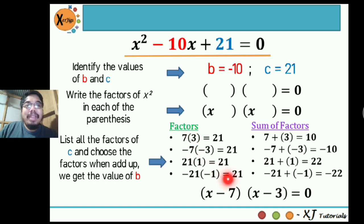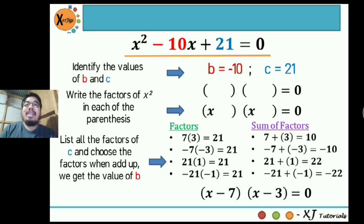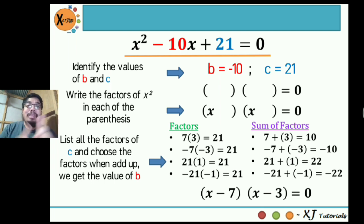So the factors we write inside the parentheses are negative 7 and negative 3. Can we interchange the positions of the factors — write (x - 3) first and (x - 7) second? Yes, you can. Because factors work like 6 × 3 = 18 and 3 × 6 = 18. Whether we interchange the positions of the factors, it will always give us the same product.